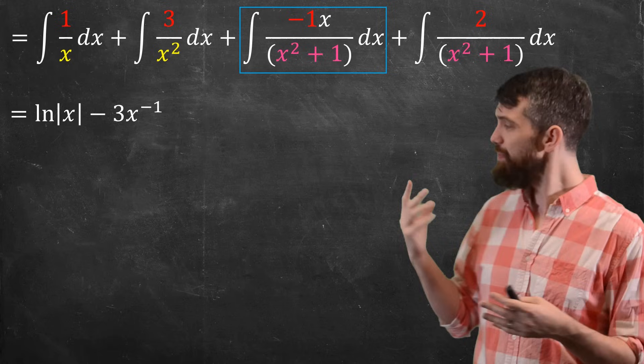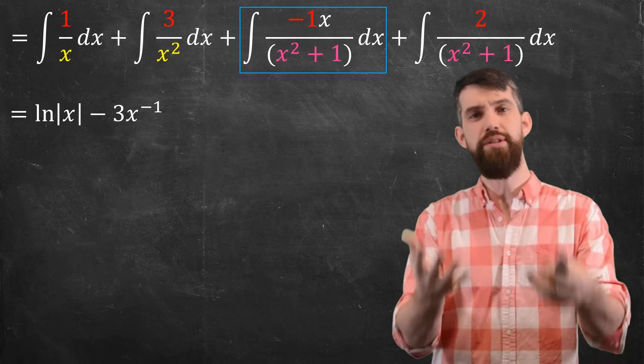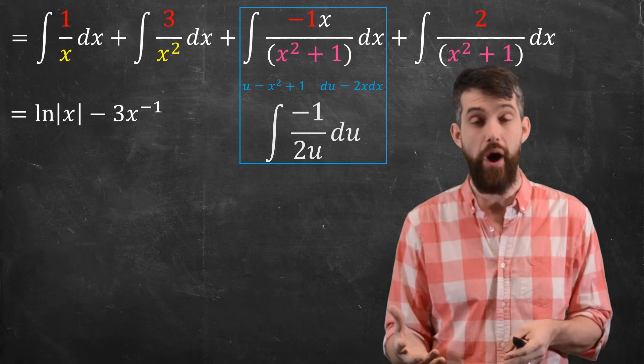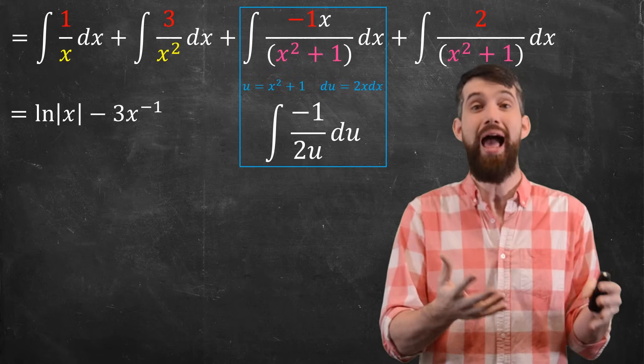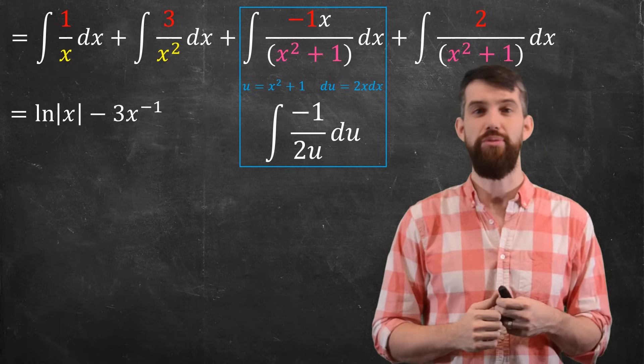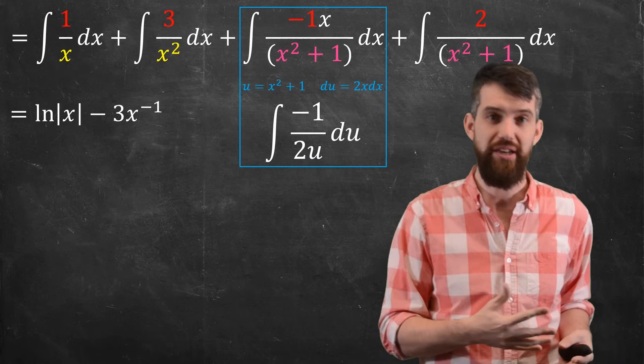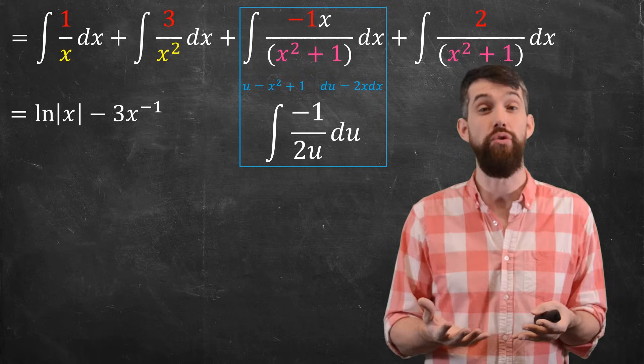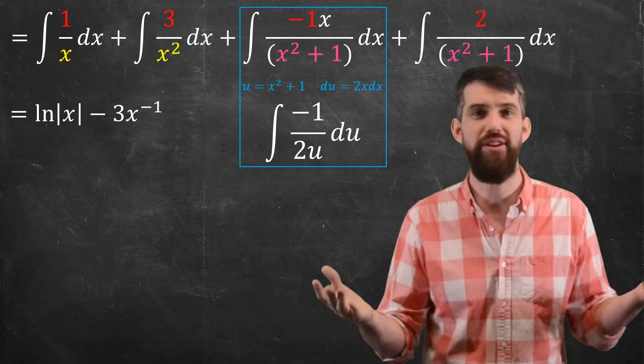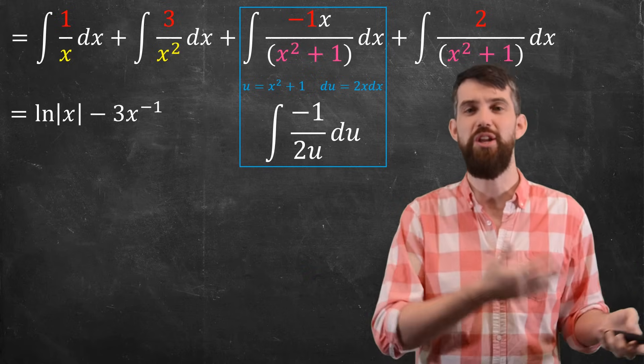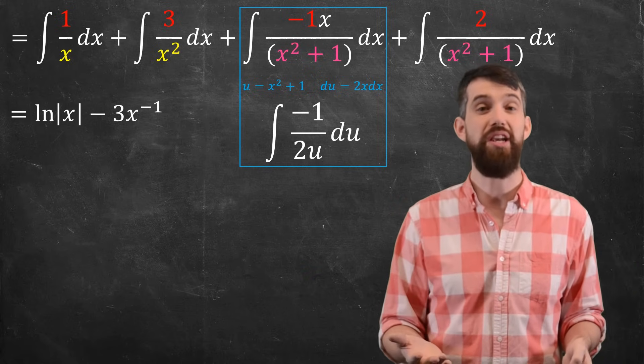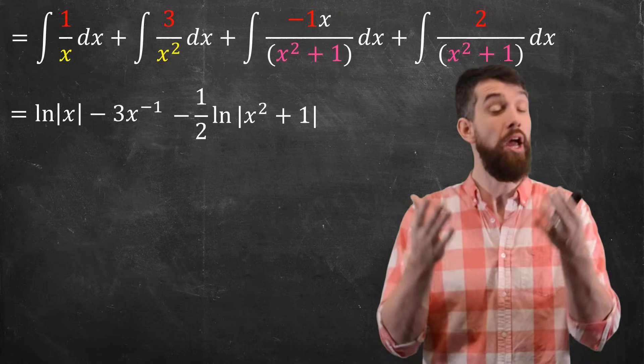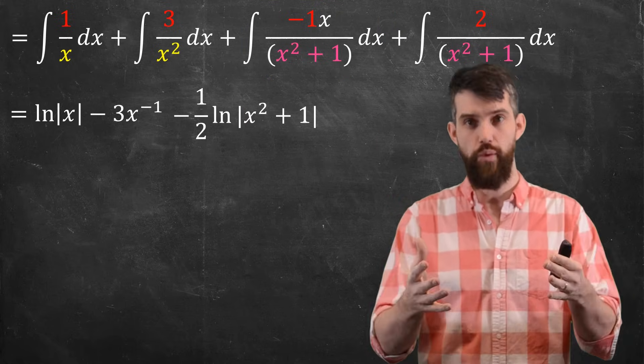In this particular scenario, now a u-substitution does work. If I set my u to be my denominator, x squared plus 1, du is 2x dx. I have an x on the top. So outside of the factor of 2, which I can divide, I get a minus 1 half. This just looks like 1 over u du. And I know how to integrate 1 over u. That's just going to be a logarithm. So I can replace this with negative 1 half, the logarithm of u, and u is x squared plus 1. So the logarithm of x squared plus 1.